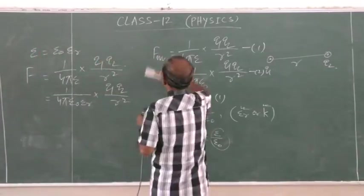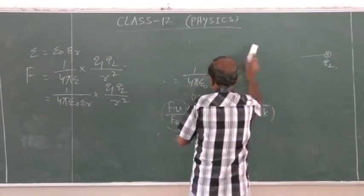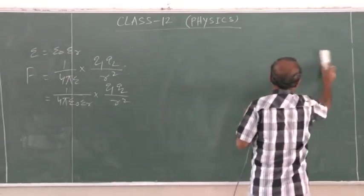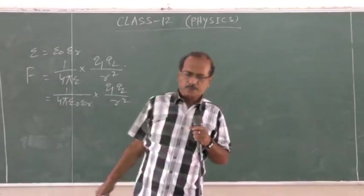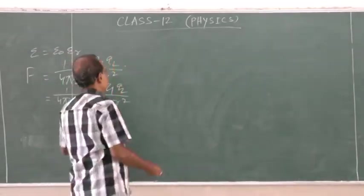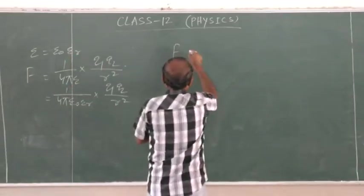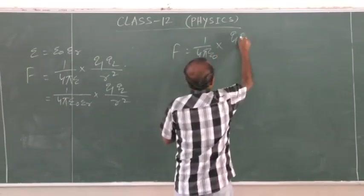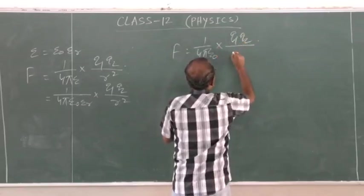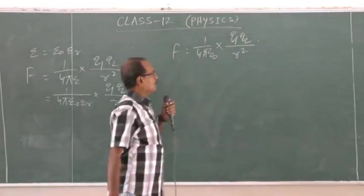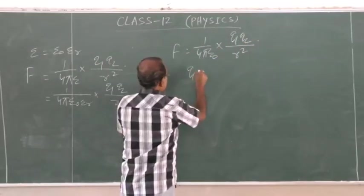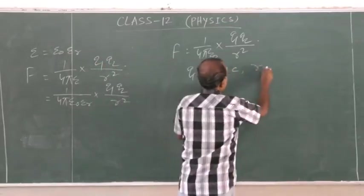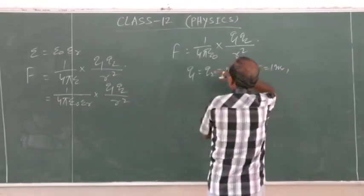Now again, the force between two charges in free space is F = (1 / 4π ε₀) · Q₁·Q₂ / r². If each charge Q₁ = Q₂ = 1 coulomb and the separation r = 1 meter, then we substitute these values.